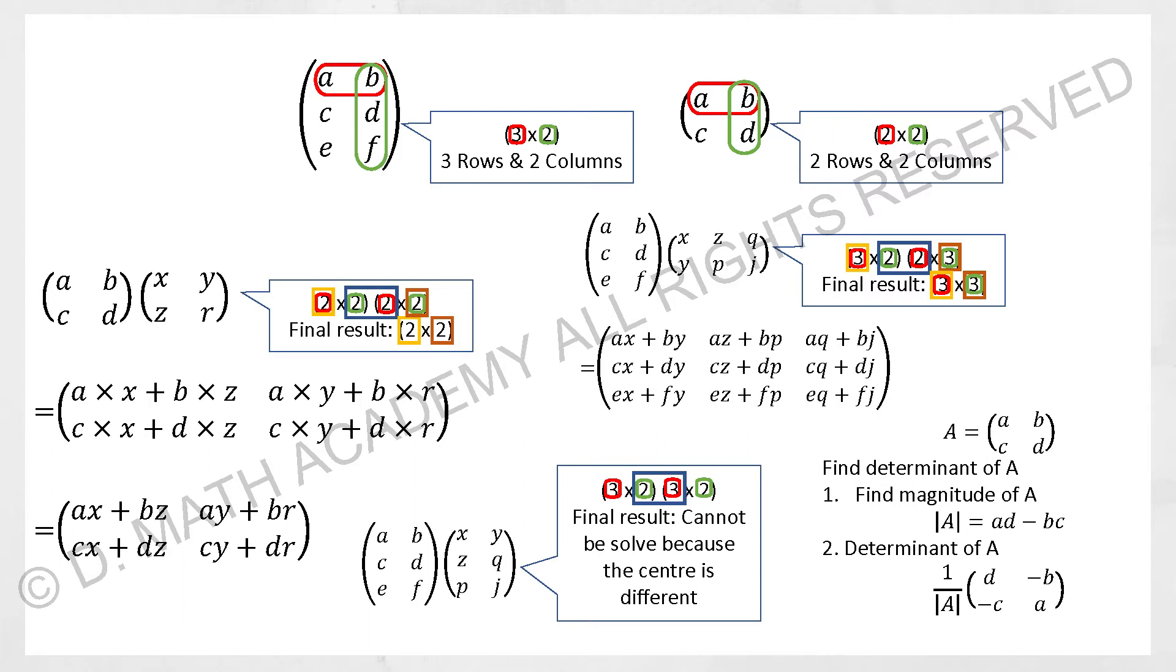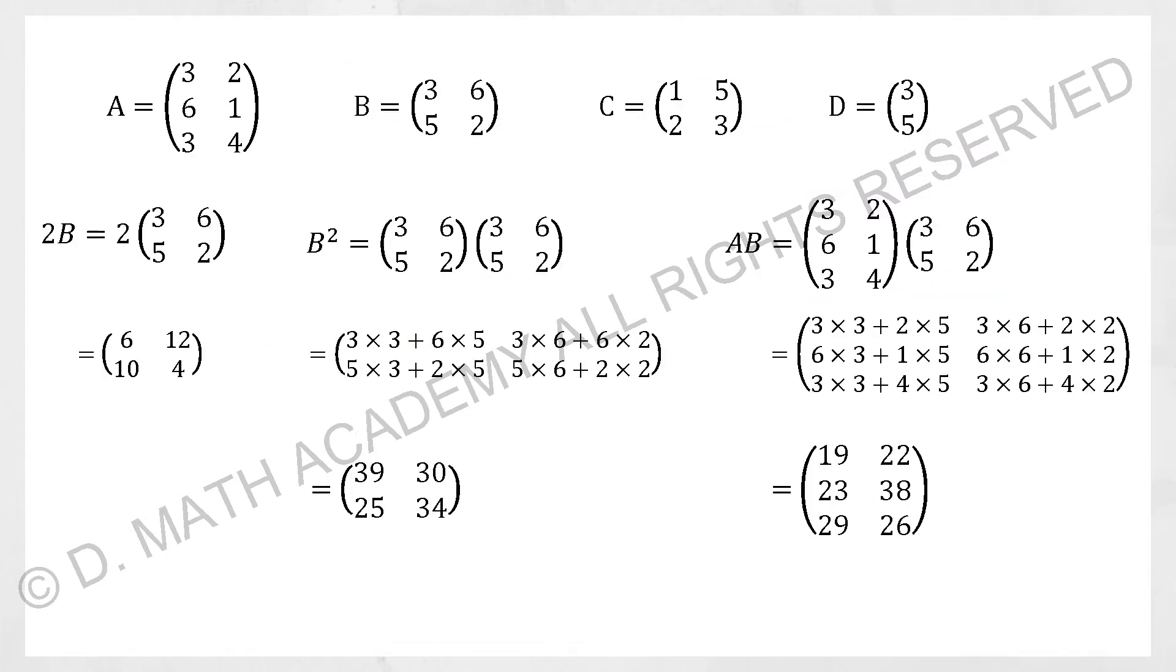Whereby for you to find the determinant of A, which is also the A inverse, you take one over magnitude of A bracket, D negative B, negative C, A. So this is the standard way to do it. I have attached a couple of example over here for you to learn and pick up this topic.